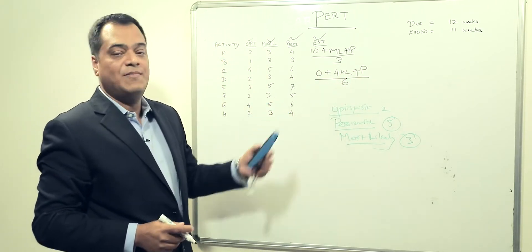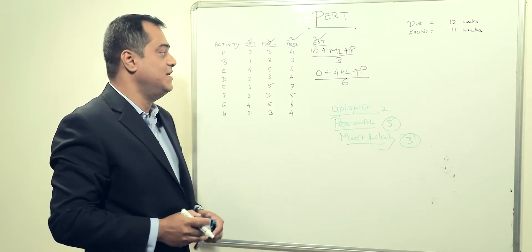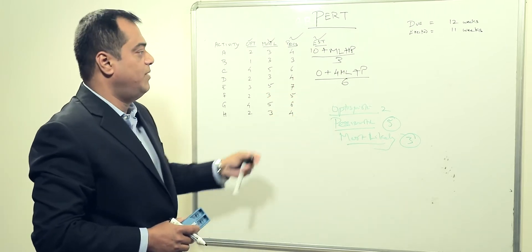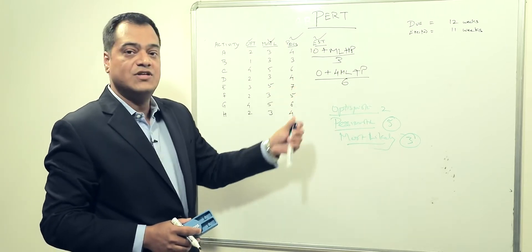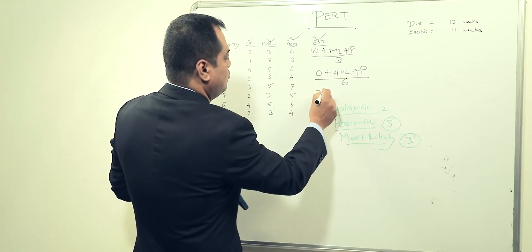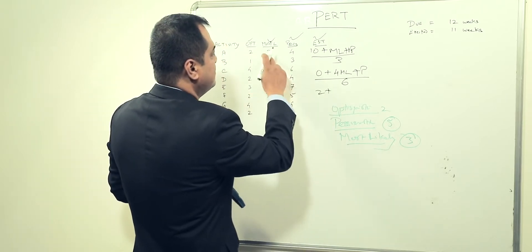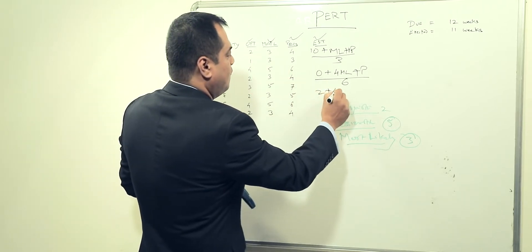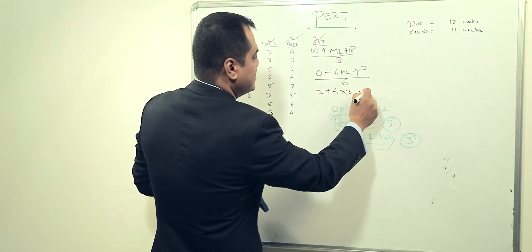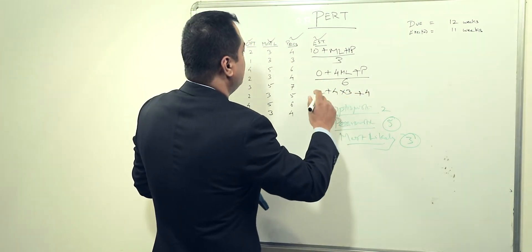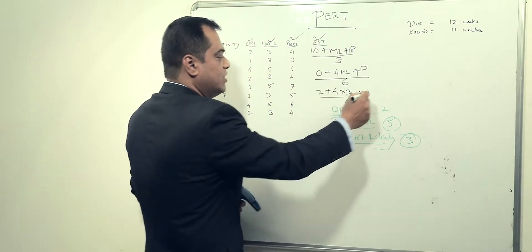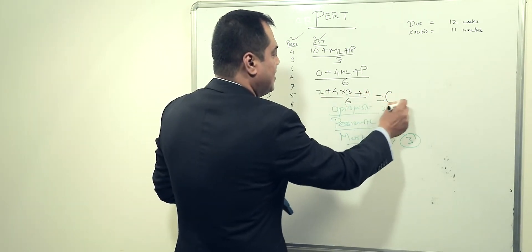Working out this formula, we get: two plus four times three plus pessimistic of four, divided by six. Whatever number comes out of this is our estimated value.